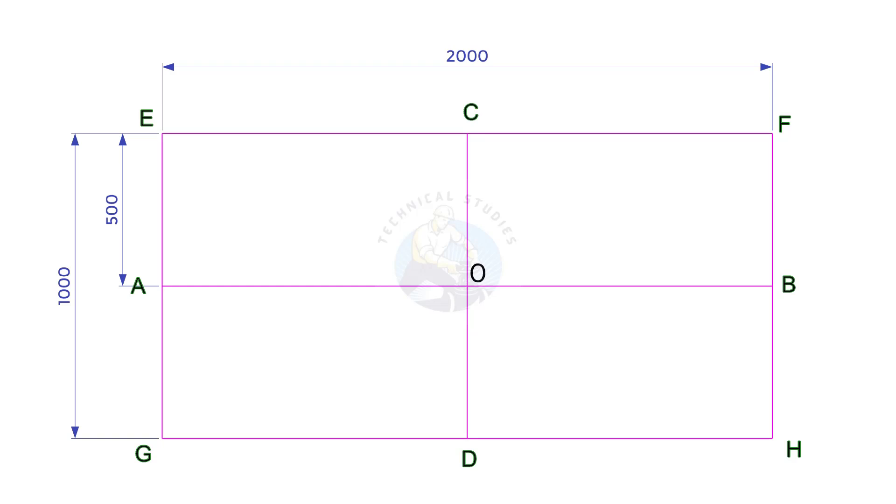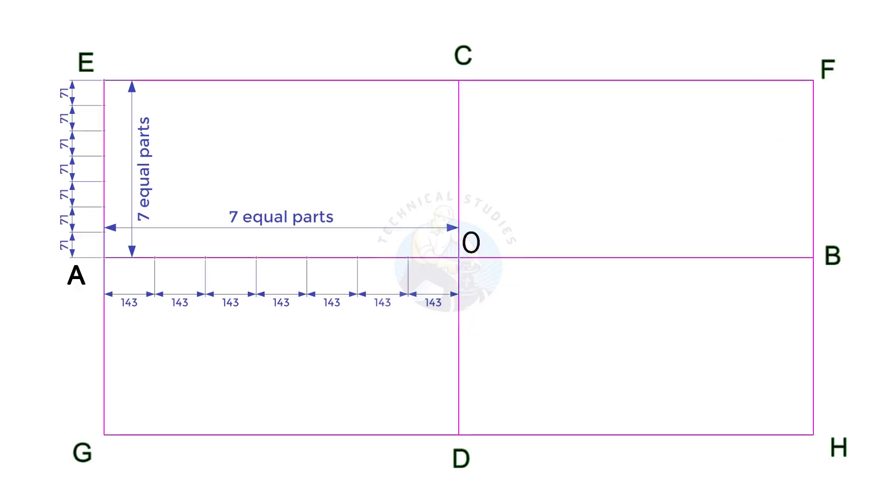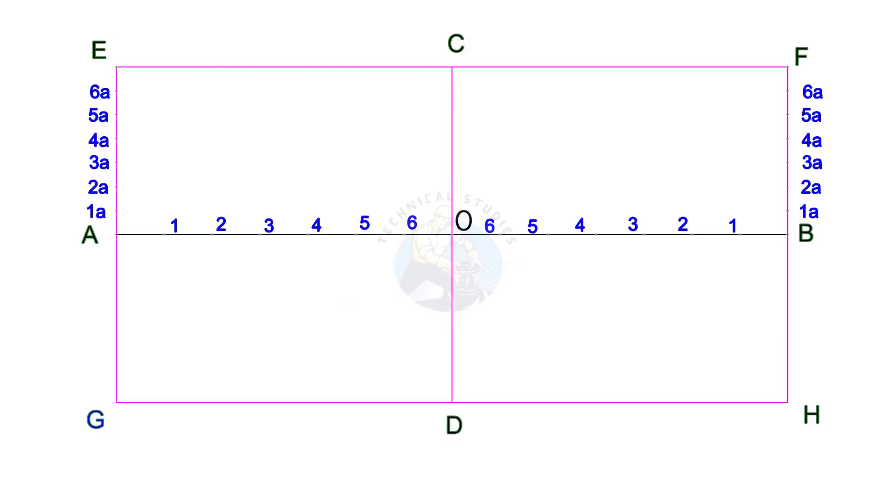Draw the rectangle EFGH. Divide line AO and AE into 7 equal parts. Divide line OB and BF into 7 equal parts.